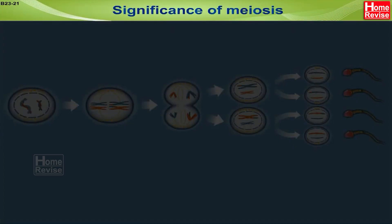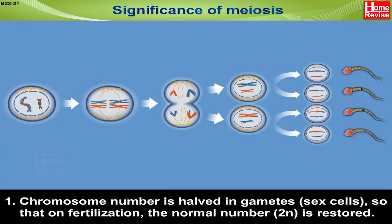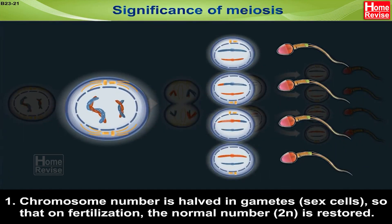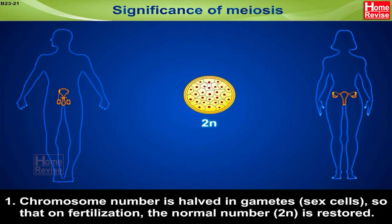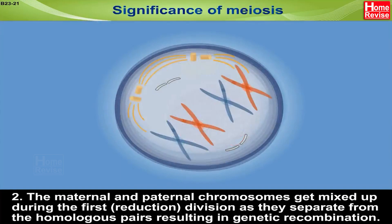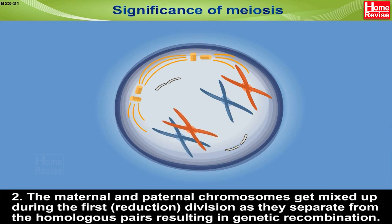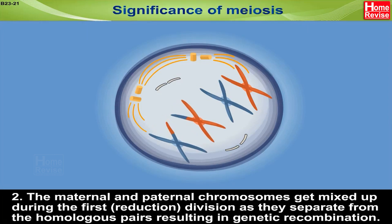Significance of meiosis: 1. Chromosome number is halved in gametes (sex cells), so that on fertilization, the normal number (2N) is restored. 2. The maternal and paternal chromosomes get mixed up during the first (reduction) division as they separate from the homologous pair, resulting in genetic recombination.